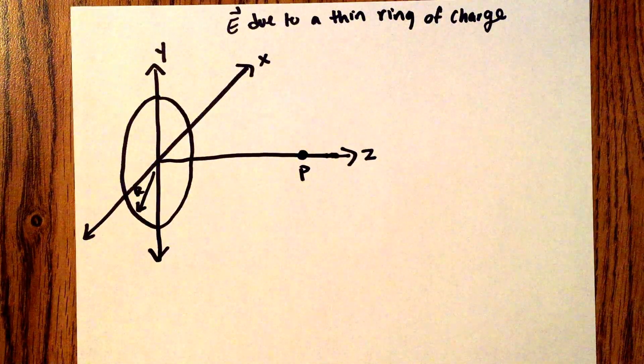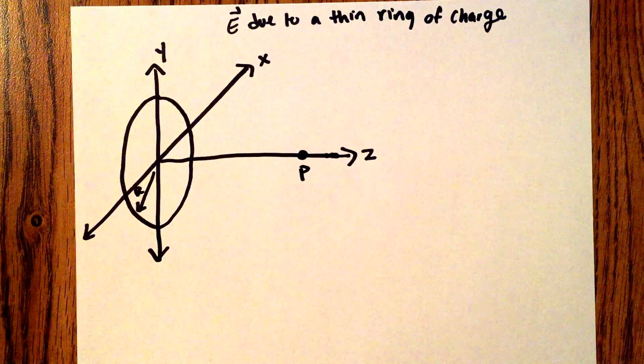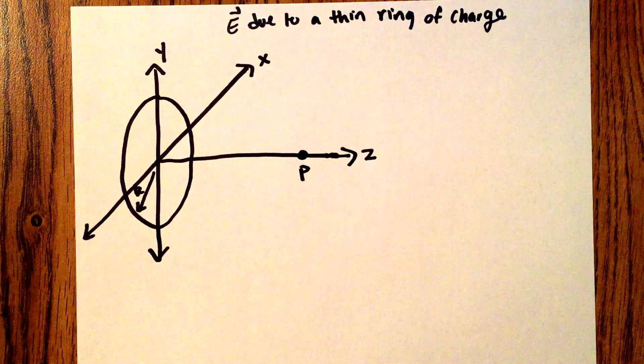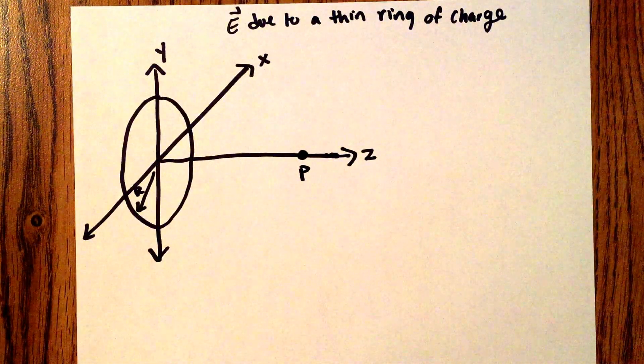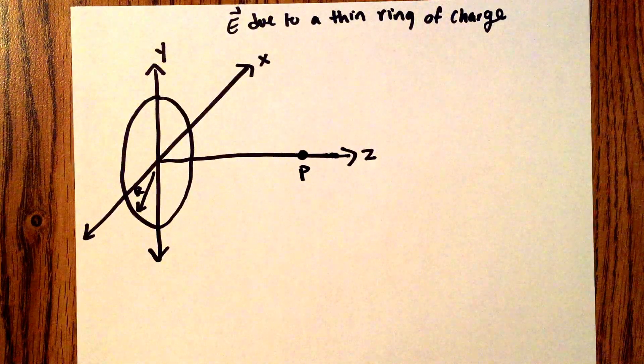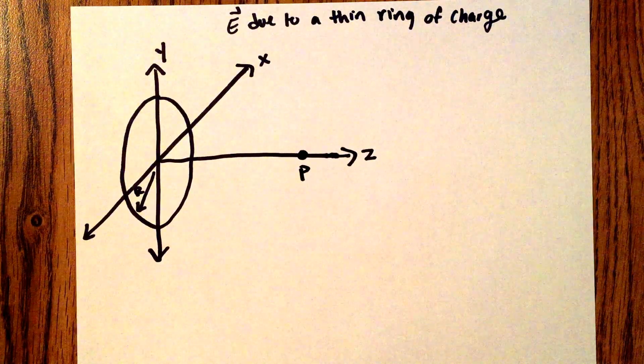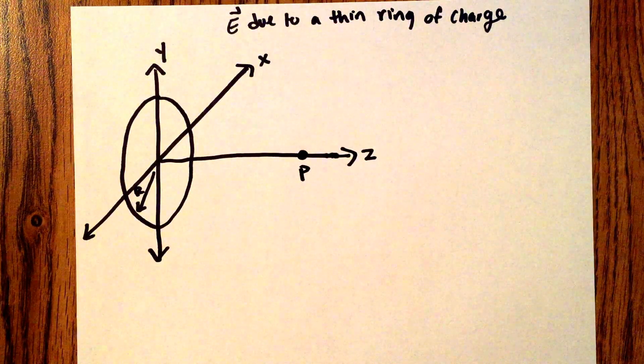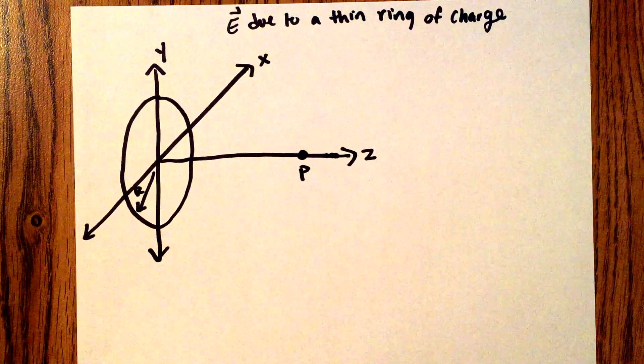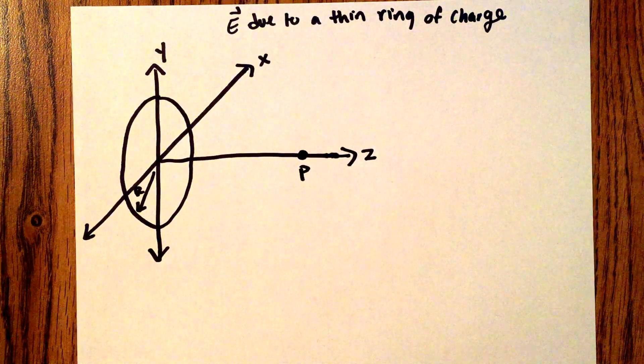Hi, this is Susie Poore, class of 2017, and today I'll be finding the electric field at a point P on the z-axis due to a thin uniformly charged ring.